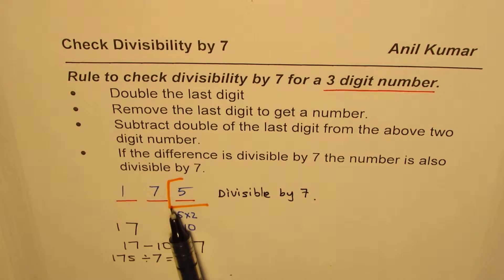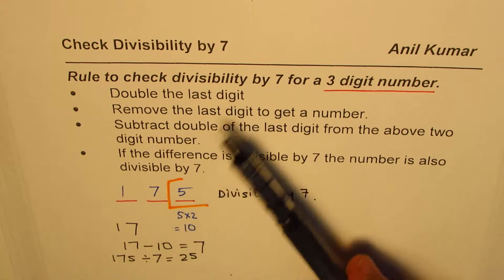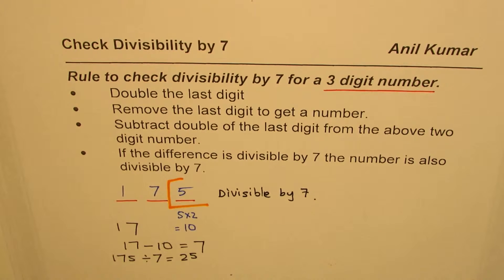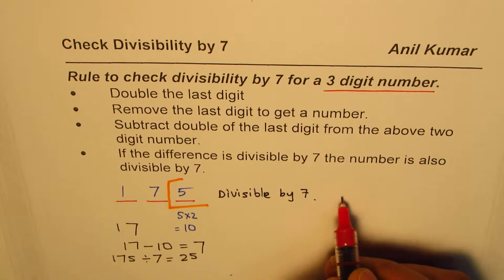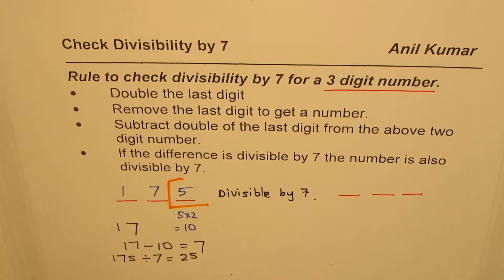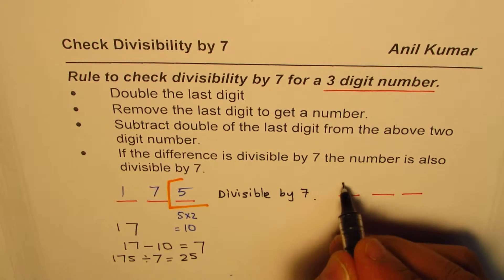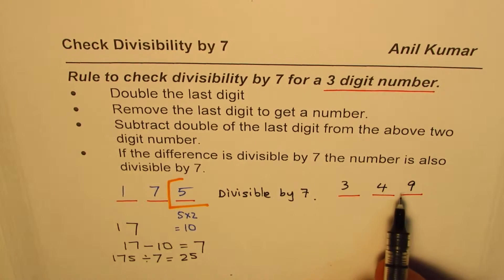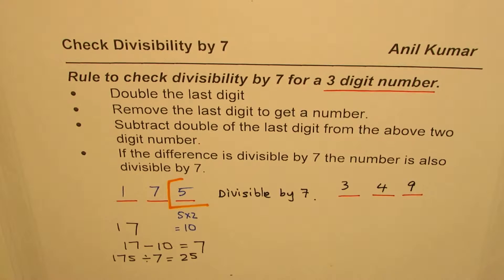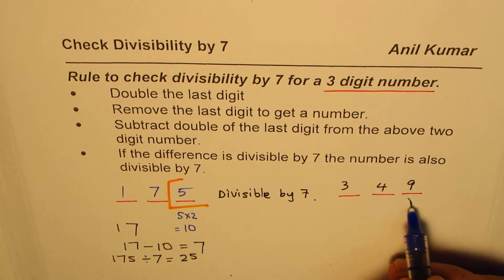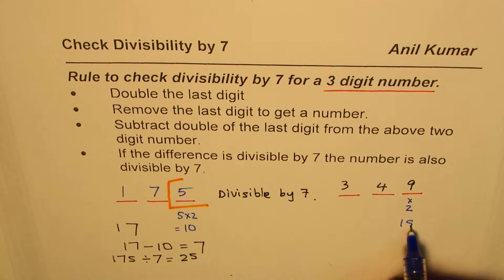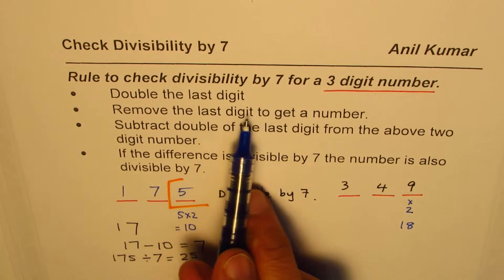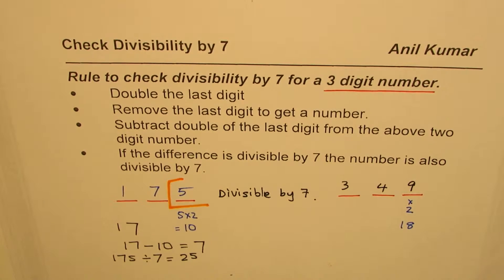Let's go back to the rule. For a three-digit number, write any three-digit number, let's say 349. It says double the last digit, so the last digit is 9. We'll multiply this by 2 to get 18. Remove the last digit to get a number, so we get 34.